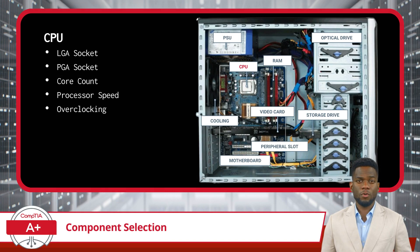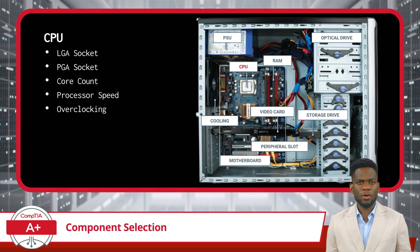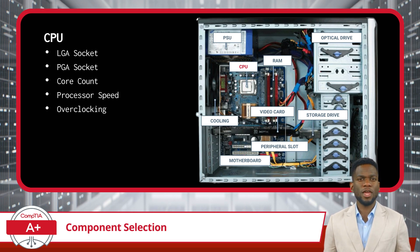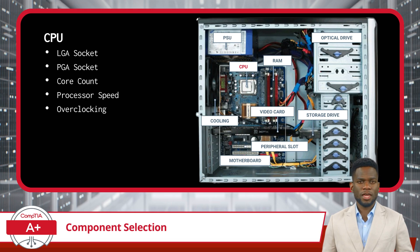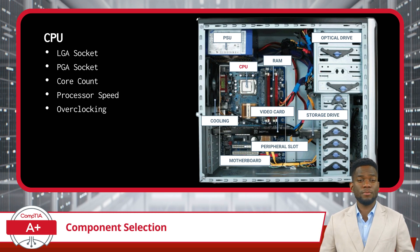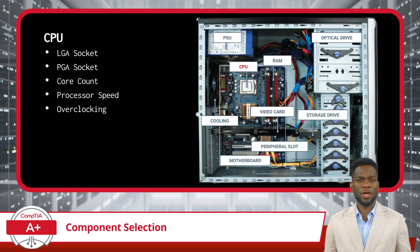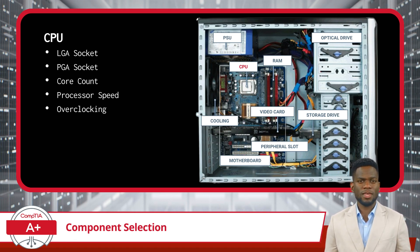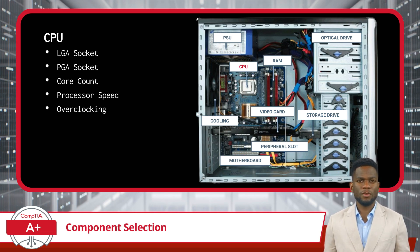When selecting a CPU, several key factors influence performance and compatibility. The socket type determines which CPUs are compatible with the motherboard. For example, Intel typically uses the LGA socket type, while AMD uses the PGA socket type. Therefore, it is necessary to choose a CPU that matches the socket type of the selected motherboard to ensure proper installation and functionality. Additionally, consider the CPU's core count and clock speed. For virtualization servers, a high core count is essential to handle multiple virtual machines efficiently — more cores enables more concurrent processes, improving overall server performance. On the other hand, gaming PCs benefit from high clock speeds for faster individual core performance, enhancing gameplay responsiveness and frame rates.